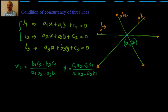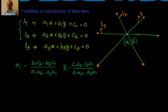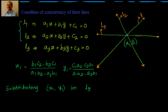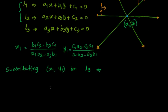So we have found the point of intersection of l1 and l2. This point should also be satisfied by line 3. Let me substitute (x1, y1) into l3: we will have a3·x1 + b3·y1 + c3 = 0.